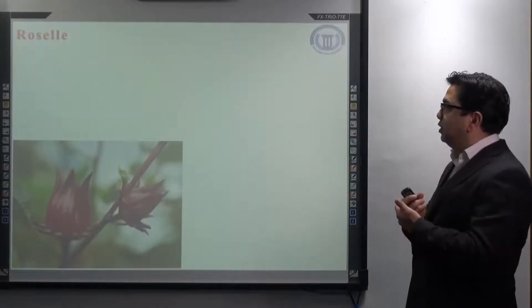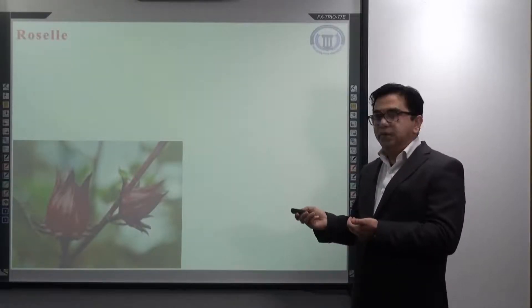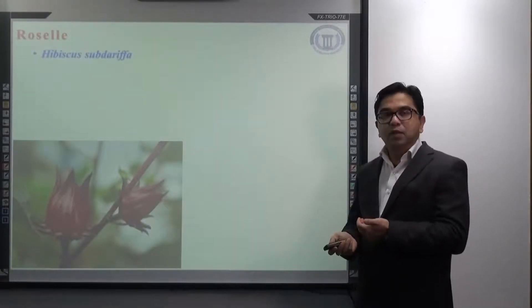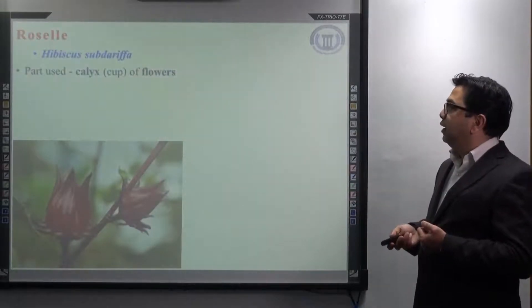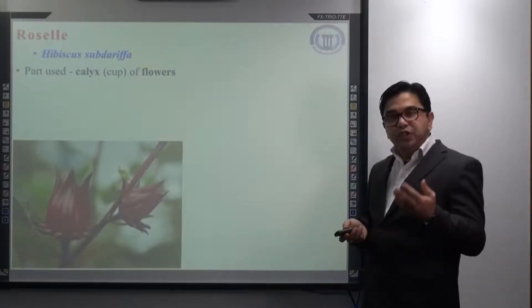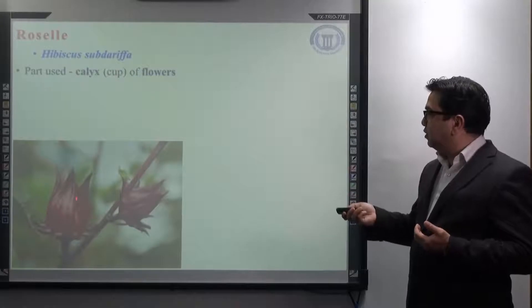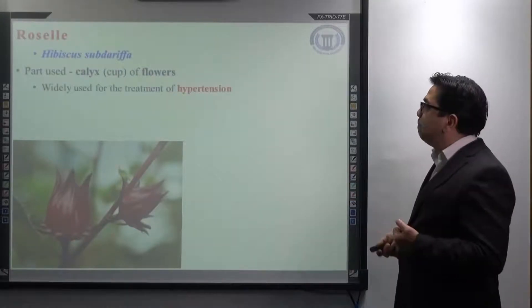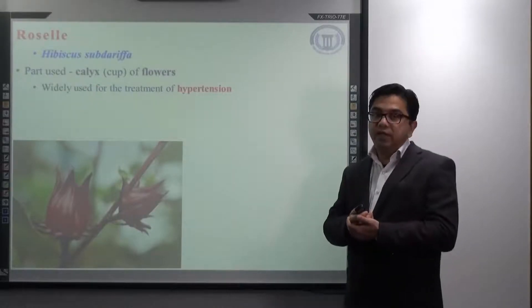Next example is again very interesting one, Roselle. If you look at the picture, this is the cup of the Roselle. Here, the botanical name is Hibiscus sabdariffa. The part of the plant that is mainly used pharmacologically is the calyx or cup of the flowers. This is the picture of calyx or cup of the flowers. It is widely used for the treatment of hypertension.